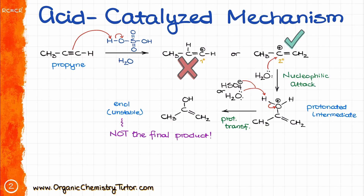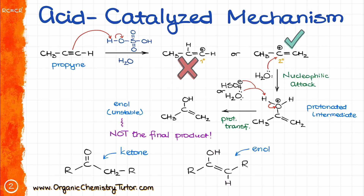The enol intermediate is rather unstable and will not be the final product. As I mentioned at the very beginning, this reaction undergoes keto-enol tautomerization to give a ketone as the final product. A ketone functional group is the one where I have the carbonyl C=O double bond connected to two alkyl groups, while the enol is a functional group in which the OH is sitting on one of the carbons of the double bond. Tautomerization is just a fancy way of telling us that these two functional groups are at equilibrium with each other, and this equilibrium typically favors the ketone side.